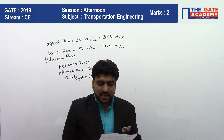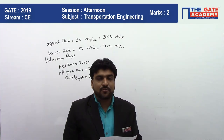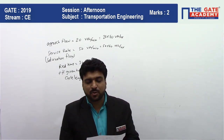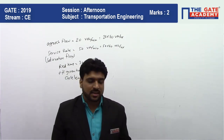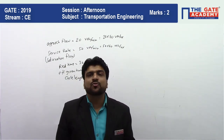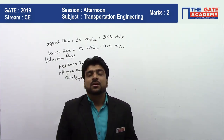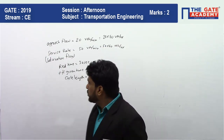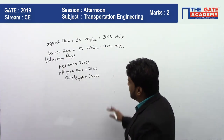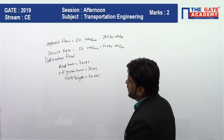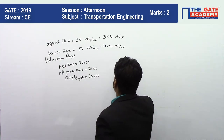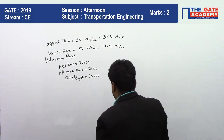Assuming there are no vehicles in the queue at the start, what is the average delay per vehicle using the approach road during the cycle length? We need to find the delay per vehicle. For delay, we can use the direct formula.